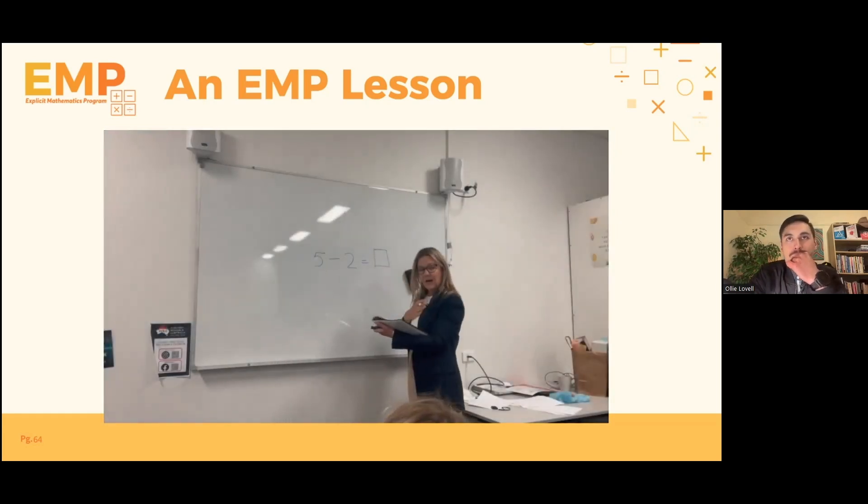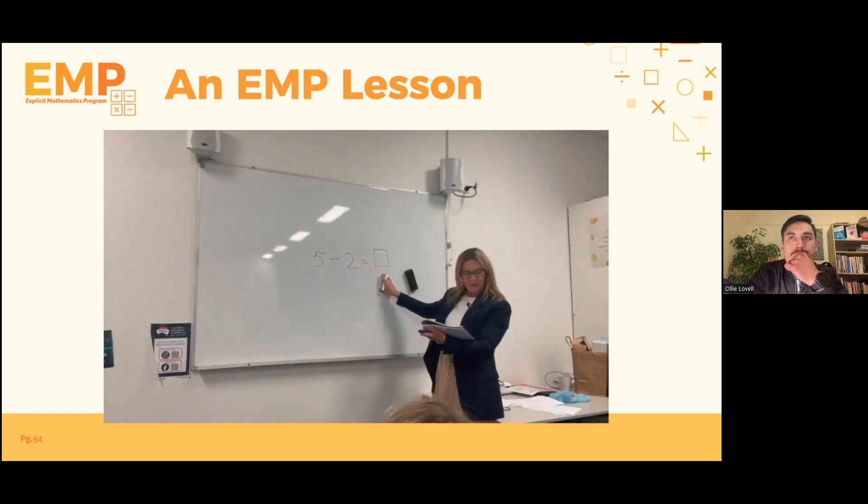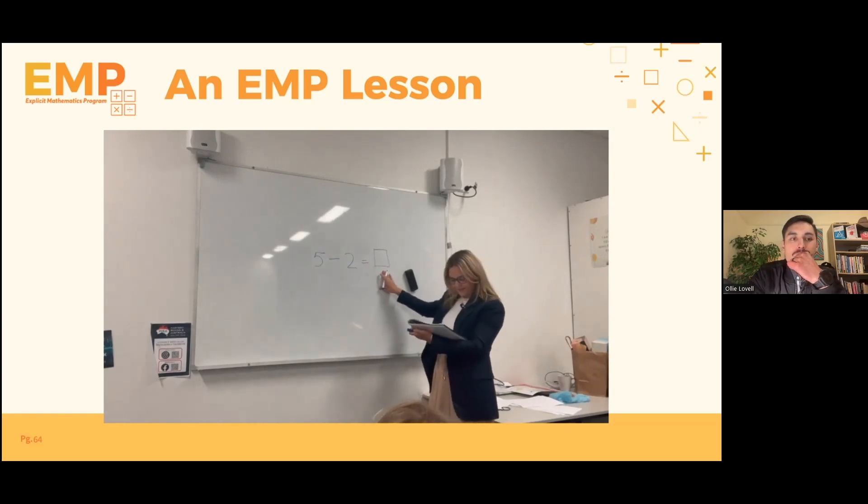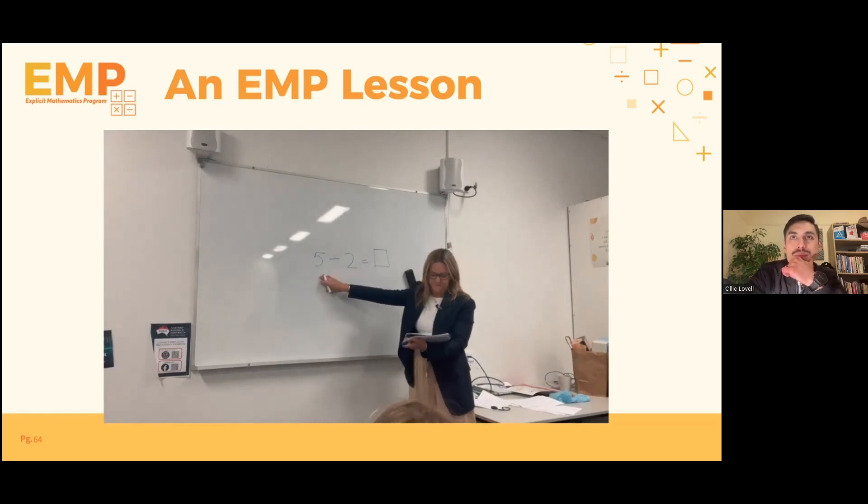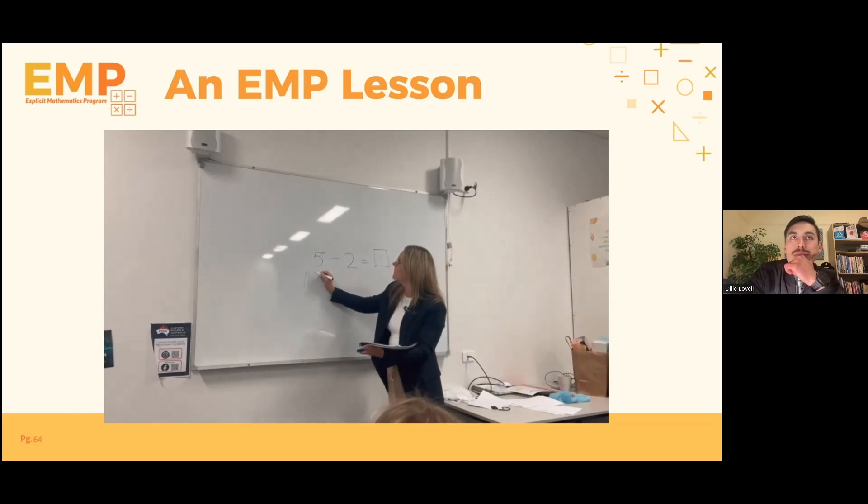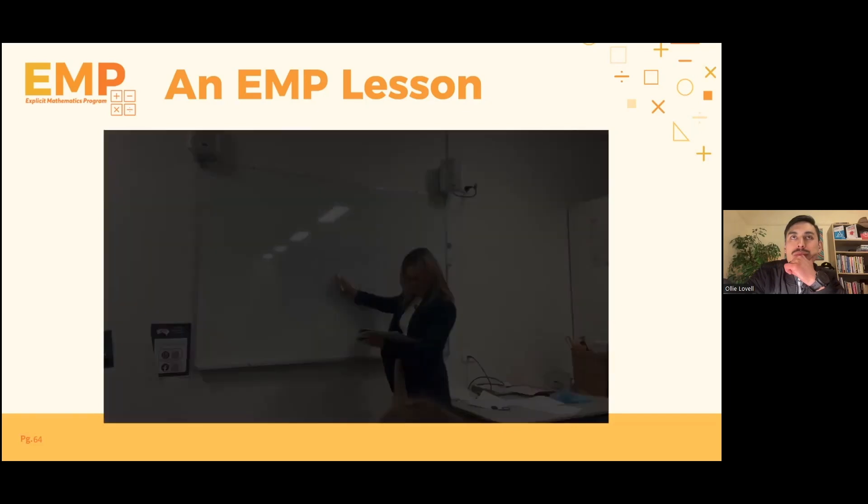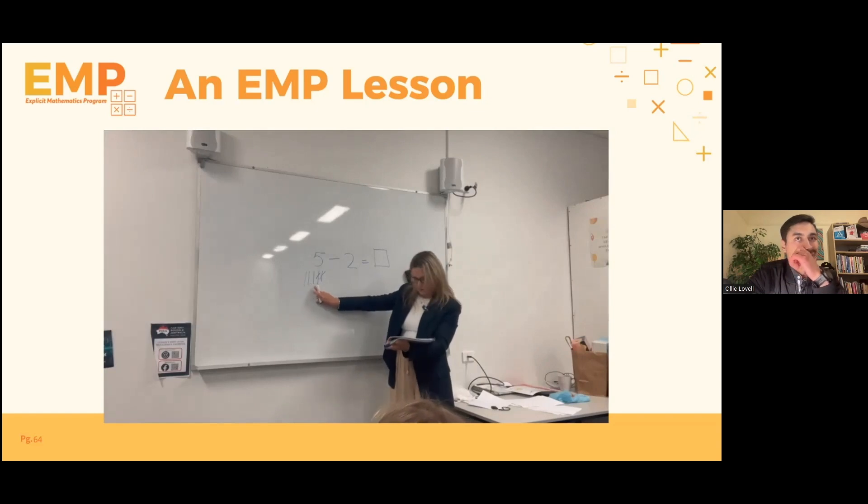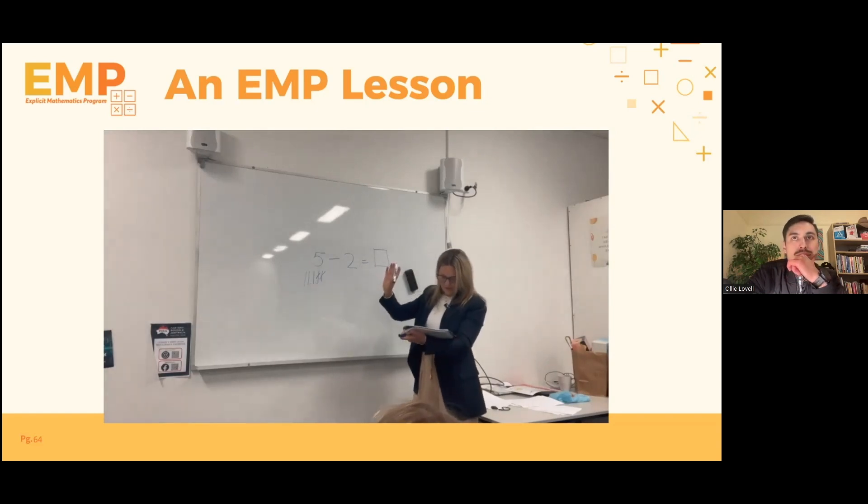Okay. My turn listening. Five minus two equals how many? Your turn. Read with me. Five minus two equals how many? I'm going to show you how to solve takeaway problems like this. What's the first number? Five. I'll draw five lines below. Count as I draw. One, two, three, four, five. Let's find out how many lines are left. Count with me. One, two, three. Three. What number goes in the box? Three. Yes, three.